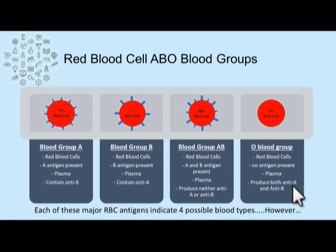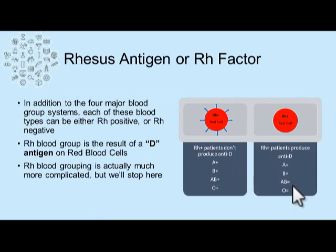Each of these RBC antigens can result in four possible blood types. However, in addition to the four major blood types produced from A and B antigens, we must also account for the Rh factor. In addition to those four major blood groups, each can be either Rh positive or Rh negative. Rh is the result of a D antigen present on the surface of red cells. Rh blood grouping is actually much more complicated, but we'll stop for simplicity at this point.